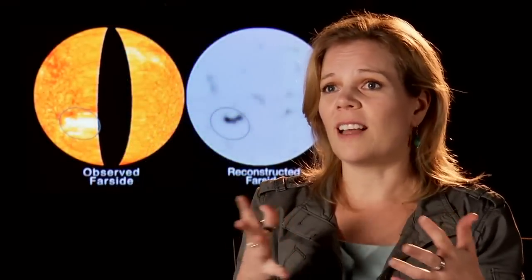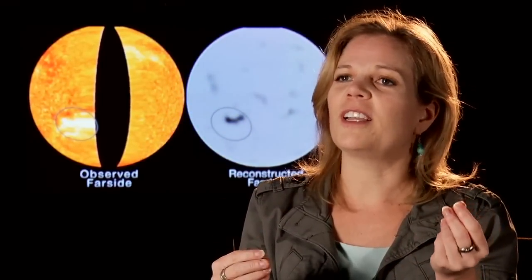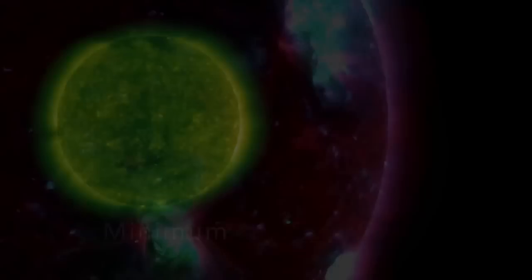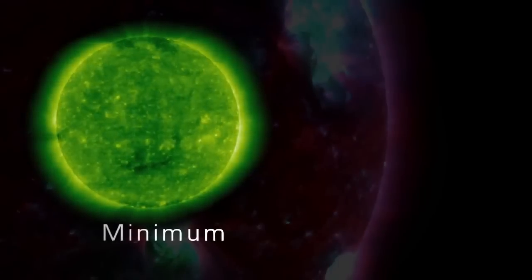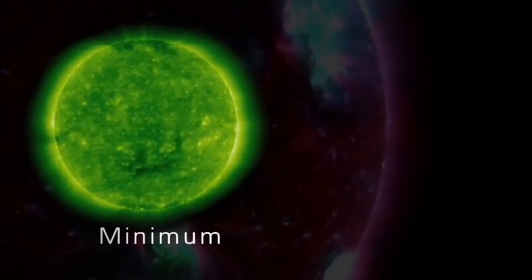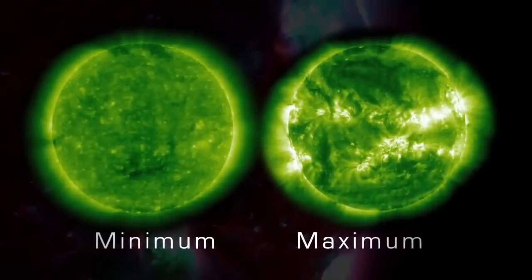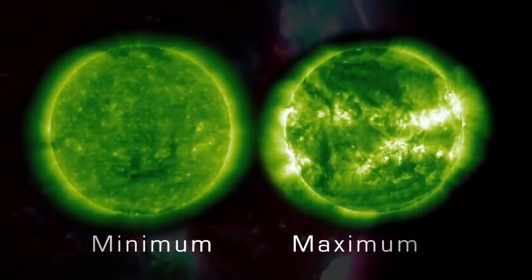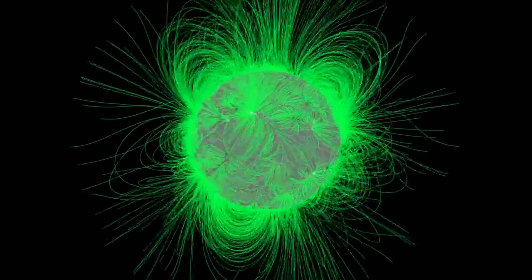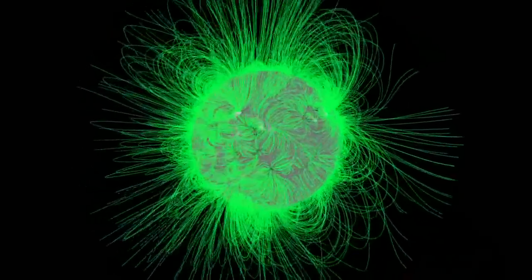The Sun goes through what we call a solar activity cycle, where every 11 years on average it will go from a very low period of solar activity — meaning sunspots and solar storms — to another period of low activity, and in between it goes through what we call solar maximum. At solar maximum, the Sun has a very complicated magnetic field structure, and therefore it creates a lot more sunspots and a lot more solar storms like flares and CMEs.